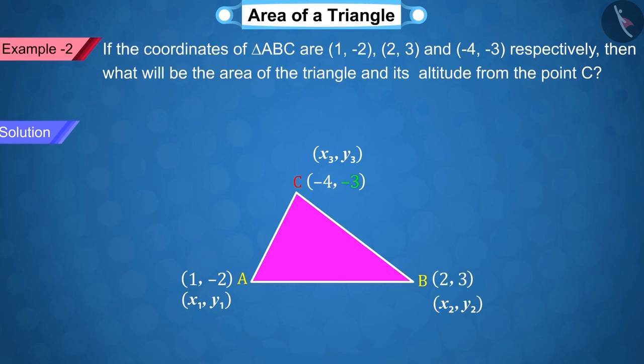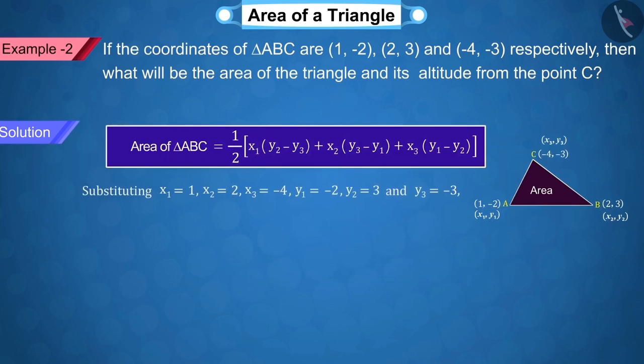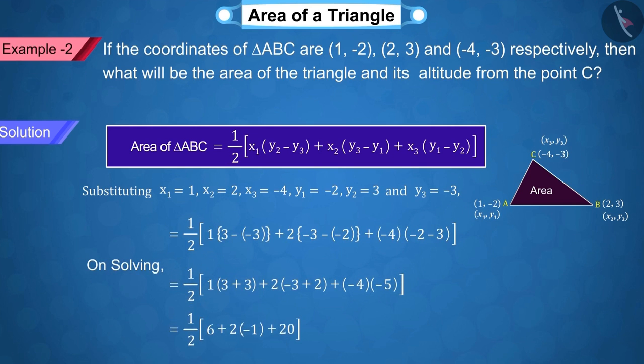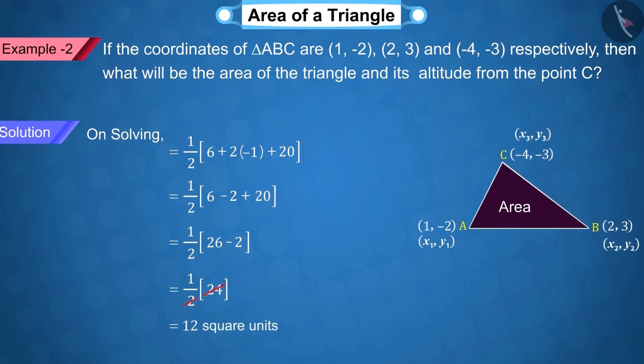With the help of these values, can you find the area of the triangle? Correct. Substituting all these values in the formula of the area of a triangle. On solving, we get the area of triangle ABC as 12 square units which is represented by equation 1 because we have found the area of this triangle.